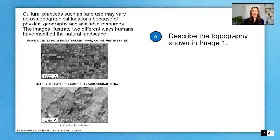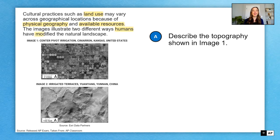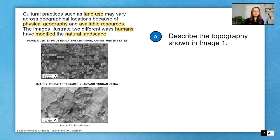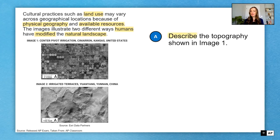It says, cultural practices such as land use may vary across geographical locations because of physical geography and available resources. So I know that this question is going to focus in on land use, and that it's going to incorporate physical geography and available resources. These images illustrate two different ways humans have modified the natural landscape. So this question is focusing us in on human environment interaction, how humans have modified our natural landscape. Part A says, describe the topography shown in image one. Describe is my key verb. So this is going to be roughly two to four sentences for a good description.